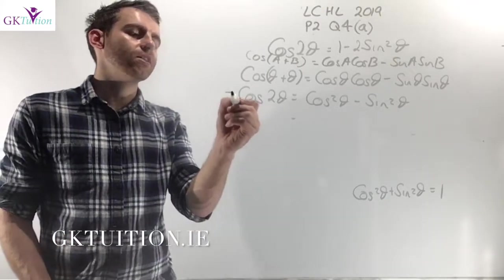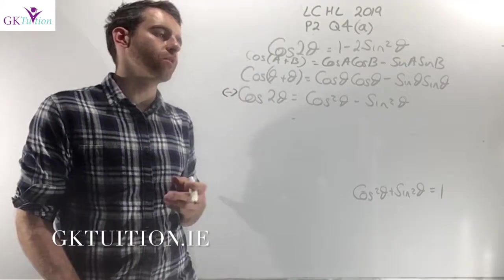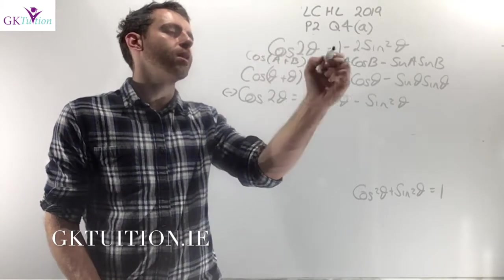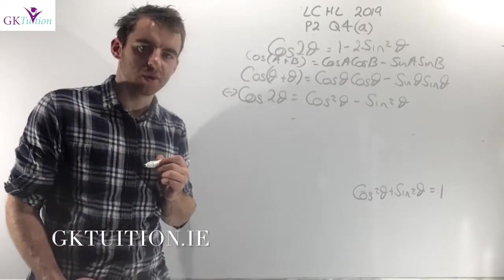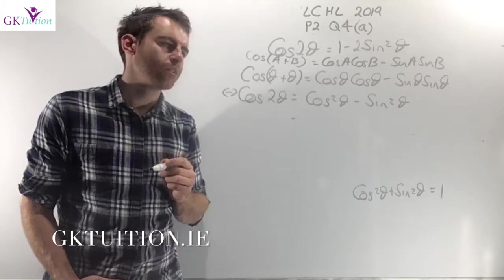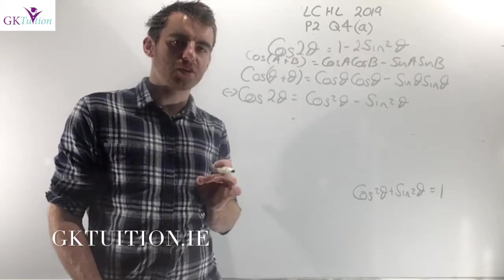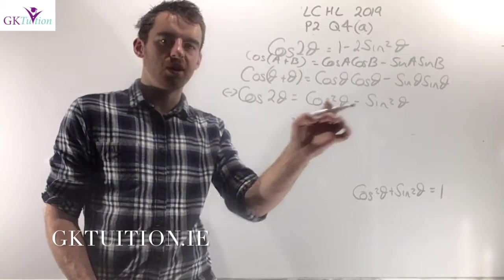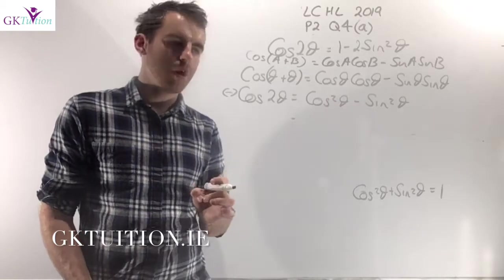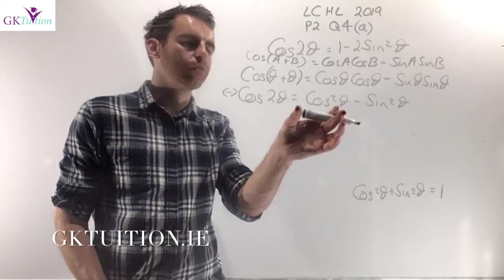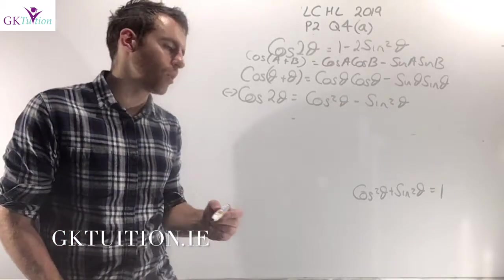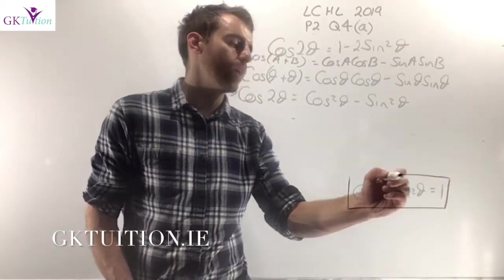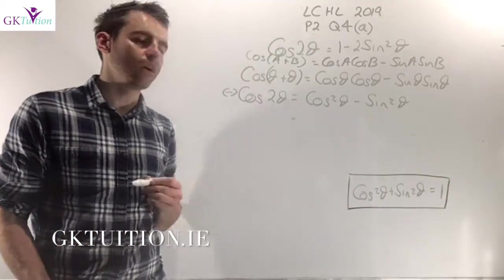At this stage, when you're on this line you should look at the answer. Ultimately I want to end up with cos(2theta) = 1 minus 2sin²(theta), so obviously I don't want any cos squareds in my answer. My right hand side has to be only sine squareds. Whenever you're trying to get rid of a cos squared or a sine squared, you need to look at the formula on page 13 in your log tables.